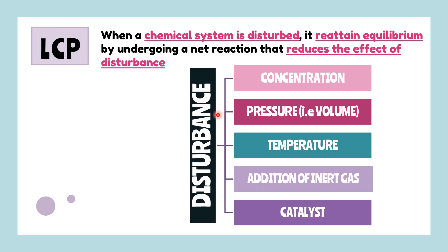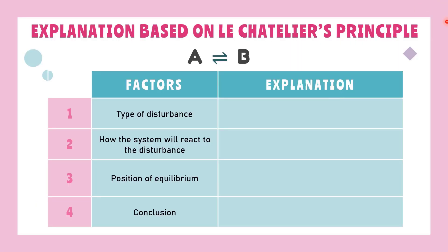There are five types of disturbances: concentrations, pressure or volume, temperature, additions of inert gas, and also catalysts. Each disturbance has different explanations to be told.